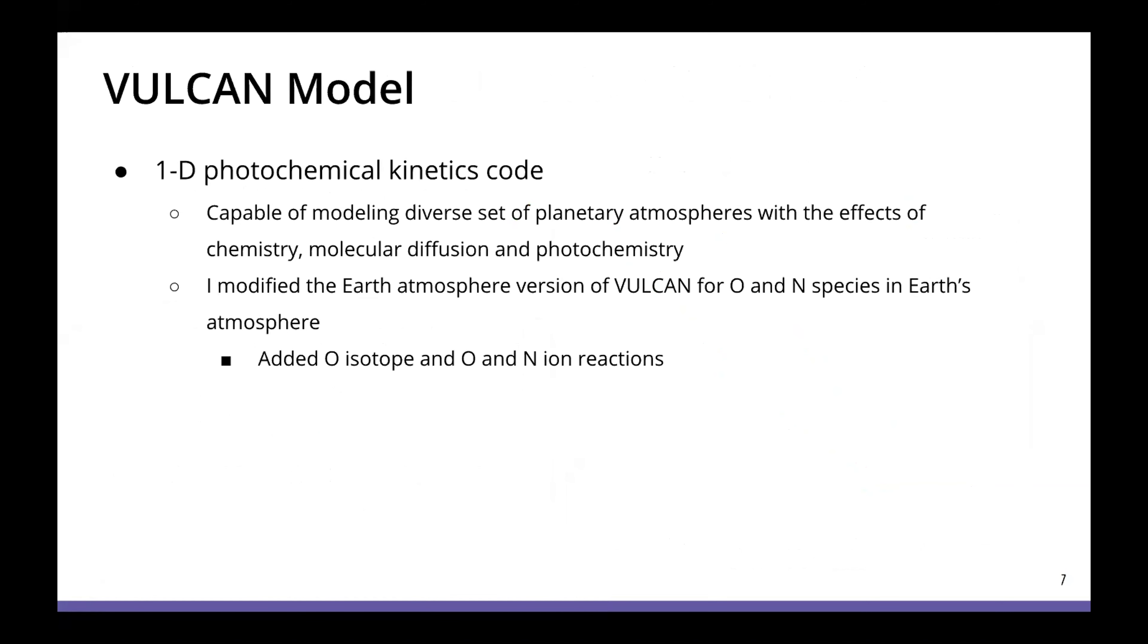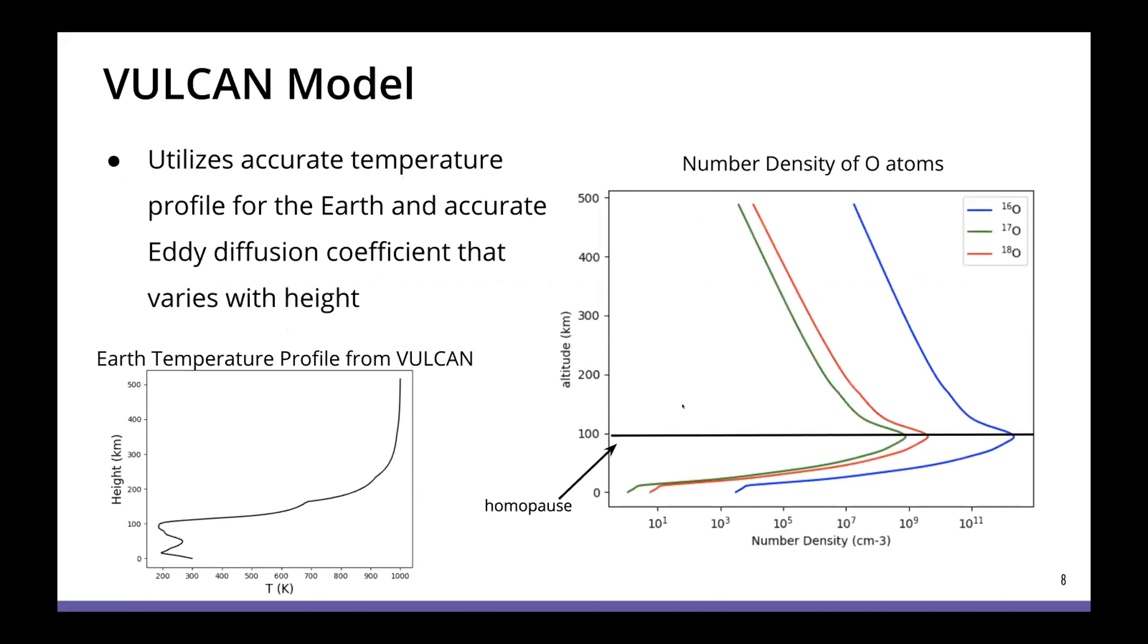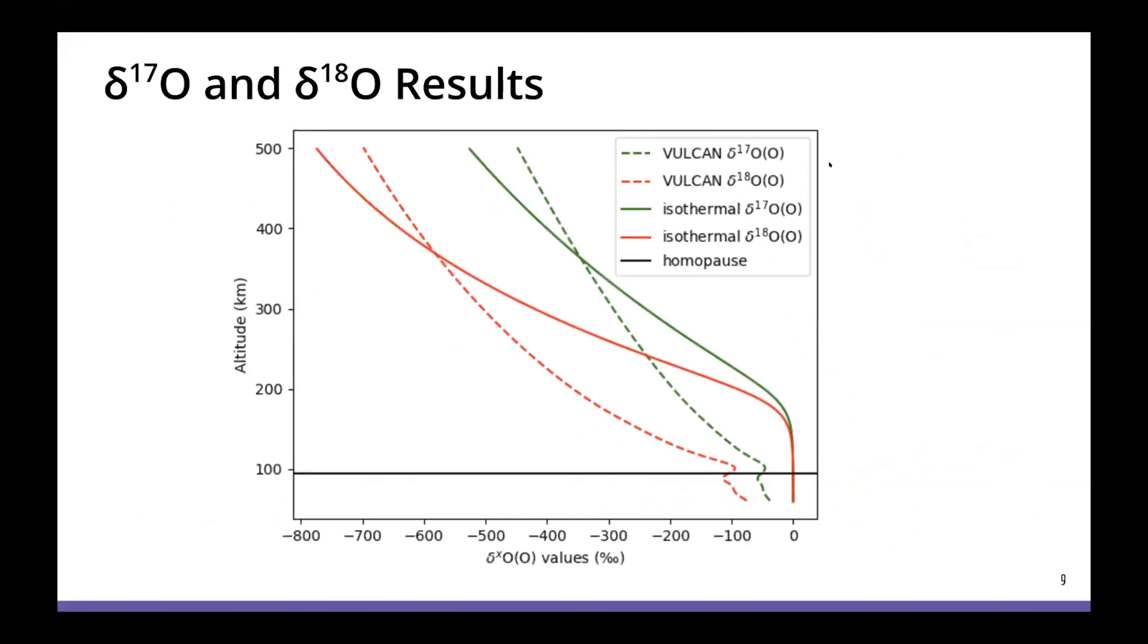So then we use the Vulcan 1D photochemical kinetics code, which was originally developed for high temperature exoplanet atmospheres. But it is readily adaptable because it is highly general and we can use it for low temperature atmospheres like solar system planets. So what we did was we adapted Vulcan to the earth thermosphere and ionosphere with the inclusion of oxygen isotopes and oxygen and nitrogen ion reactions. So for our Vulcan model, it utilizes a more accurate temperature profile for the earth and an accurate eddy diffusion coefficient that varies with height. You can see temperature profile here and we have the number density of O atoms here on the right. And you can see here that the homopause actually is in the correct location around 100 kilometers, which is where the slope shifts.